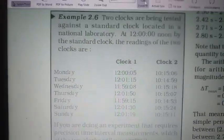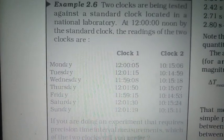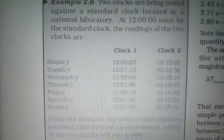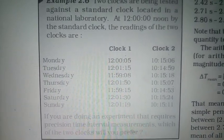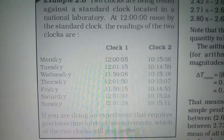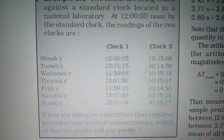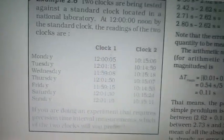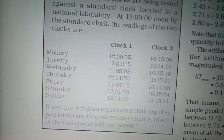Example 2.6: Two clocks are being tested against a standard clock located in a national laboratory. At 12:00:00 noon by the standard clock, the readings of the two clocks are recorded from Monday to Sunday.